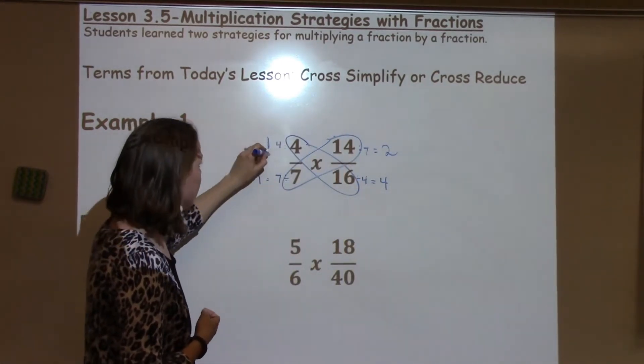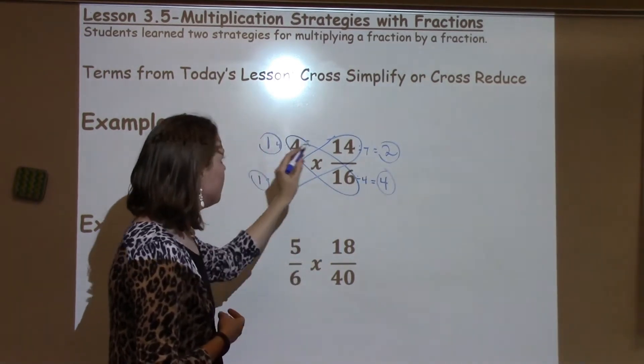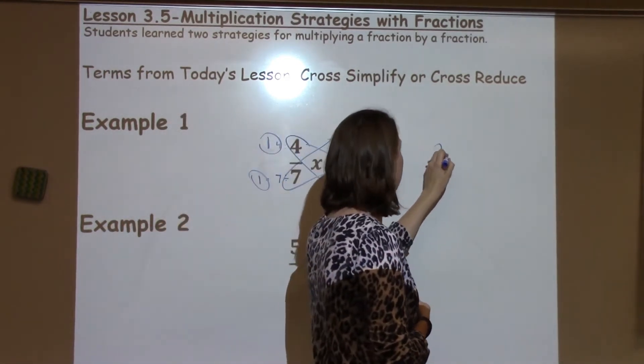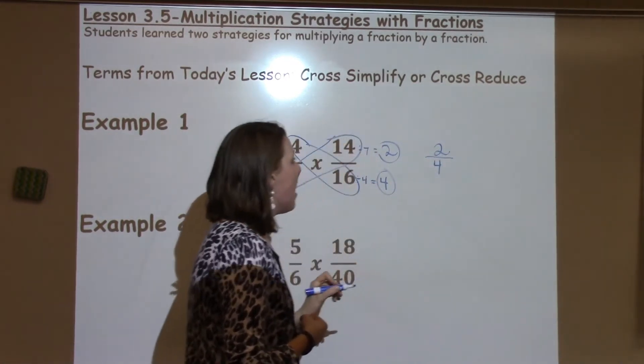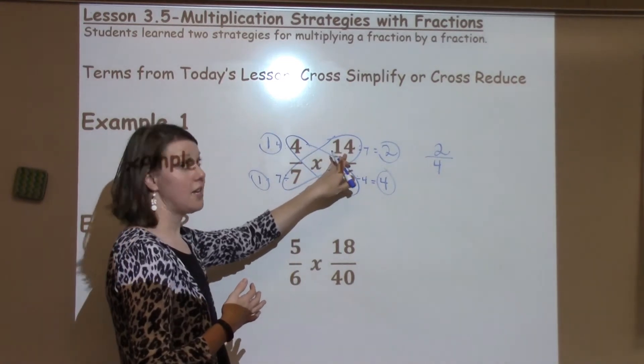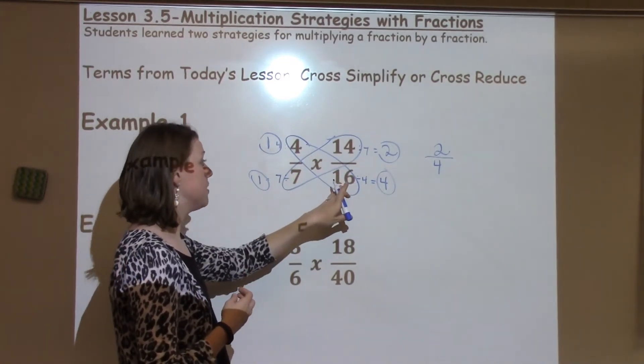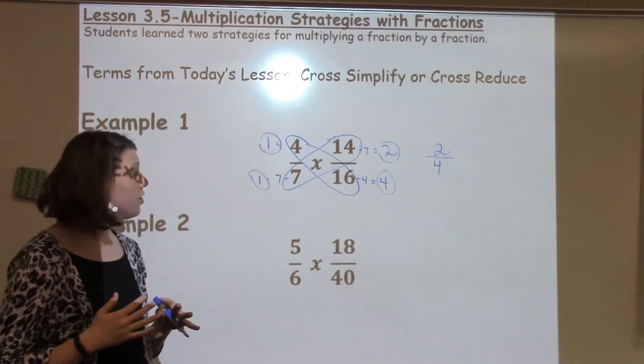When I multiply the numbers across, I'm going to look at these numbers that I have on the outside. And I have 1 times 2 is 2, and 1 times 4 is 4. Now, this is a much simpler fraction than if we would have taken 14 times 4, and then 7 times 16. Those are going to give us a lot larger numbers, which are going to take a lot longer to reduce.